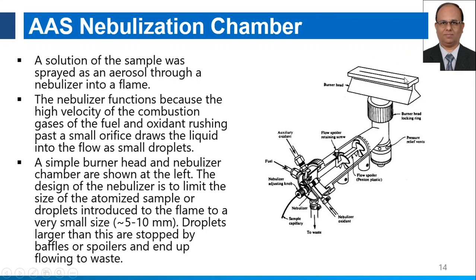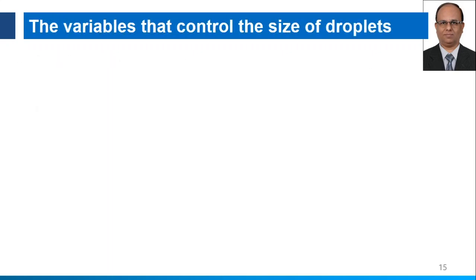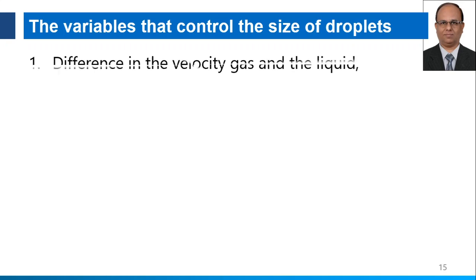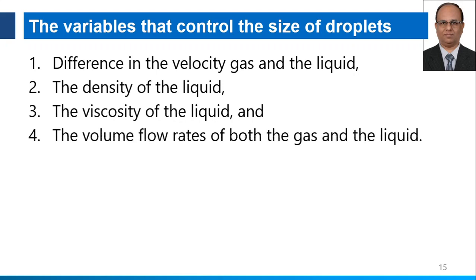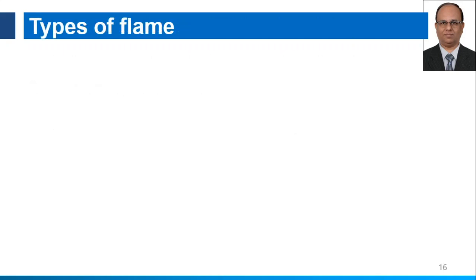The slot burner provides a bigger path length. The adjustment of flame temperature is not as critical as in the flame photometer because there is no thermal excitation here — we only need conversion of the material into atomic form, so only vaporization is essential. Variables that control droplet size are differences in the velocity of the gas and liquid, the density of the liquid, the viscosity of the liquid, and the volume flow rate of both gas and liquid.